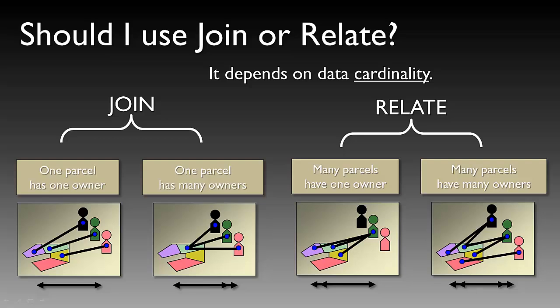Joining is often used when we have one record that has one relation, or one record that has many relations. A relate is often used when you have many records that perhaps have one owner or one relation, or many records that have many relations. The examples here use a real estate example.